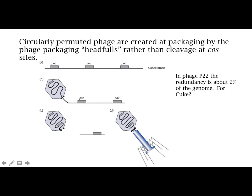Then there is cleavage. So the next genome that's going to be pulled into a head starts a little bit away from the pac site and goes on beyond it. The terminal redundancy — we don't know what it's going to be for cuque. We do know that in some phage like P22 it's about 2% of the genome; in other phage it may be more or less than that. So that's how the terminal redundancy is obtained: by having a whole genome and then some, and then the next phage starts from that 'then some' and goes on a whole genome's worth and then a little bit more.